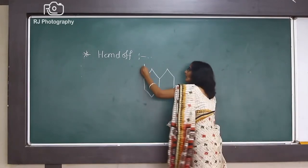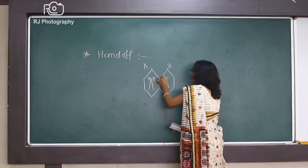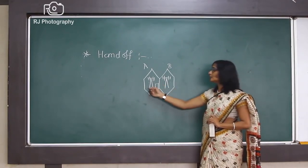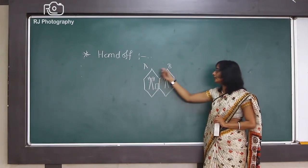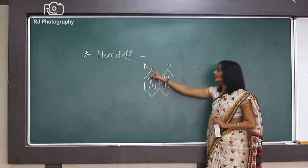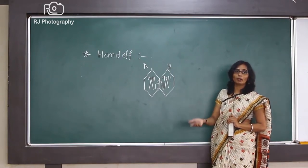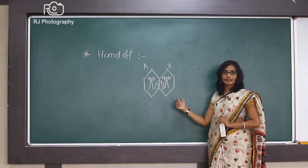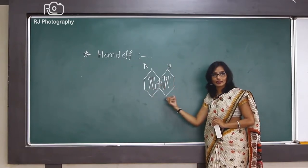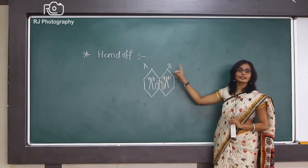Suppose there are two cells: cell number A and cell number B. Cell A has a base station and cell B also has a base station. Whenever a user is within cell A and while in a call moves to cell B, the user is no longer in contact with the base station allocated to cell A. Therefore, if the frequency is not changed, the call may be dropped. To avoid this, handoff is used. In handoff, when a user while in a call moves from one cell to another, the charge of that user is automatically given to another base station — now the user is under the coverage of the base station in cell B.